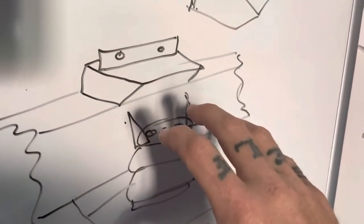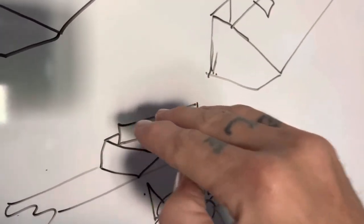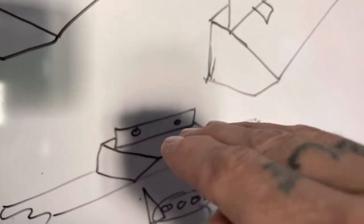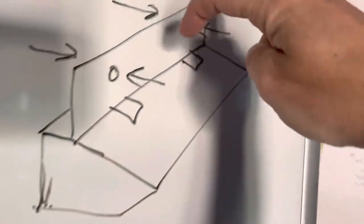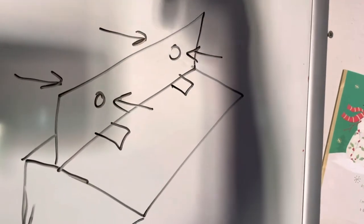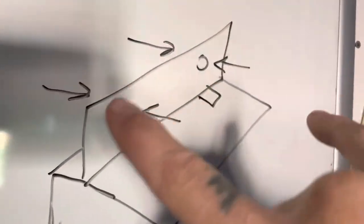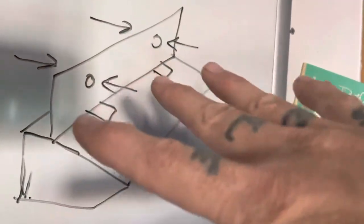Same thing up here. If you need to adjust the camber or the caster, you just loosen these two bolts, drop a couple more shims in there or take some shims out, and it changes the upper control arm.